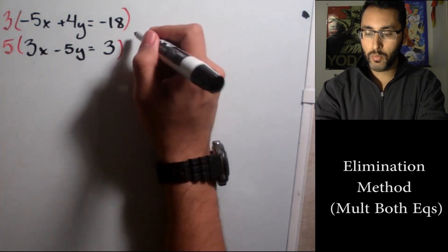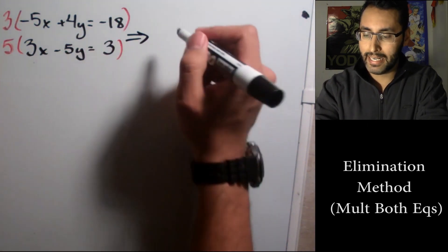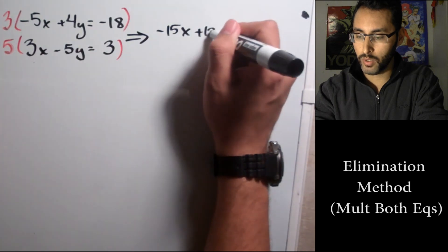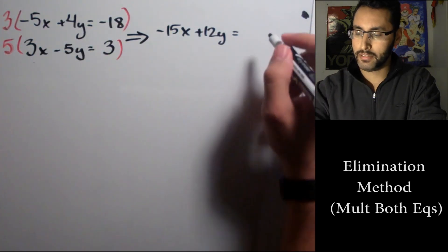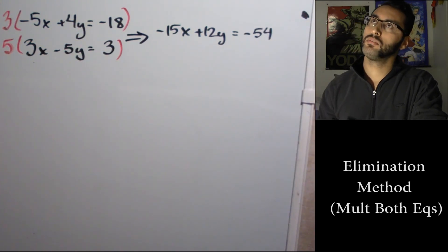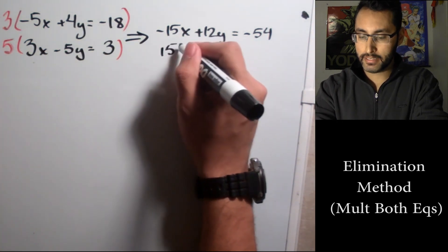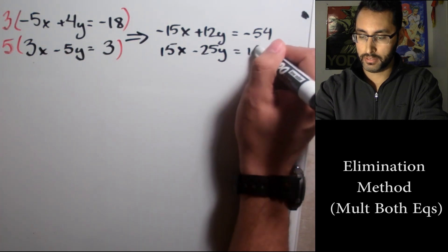All right, let's see what these two equations become. We might get some big numbers but that's okay. We're gonna get -15x + 12y = -54, and on the bottom we're gonna get 15x - 25y = 15.